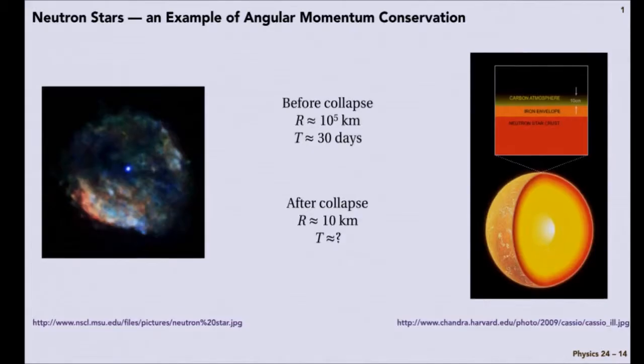So the radius dropped by a factor of 10 to the 4. So the density, if the mass didn't change, the density went up by a factor of 10 to the 12. So a teaspoon has a whole lot of mass in it.